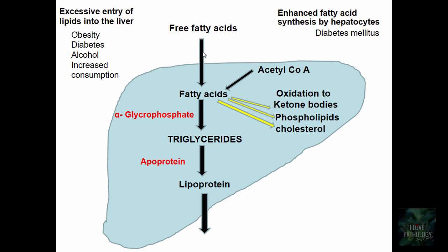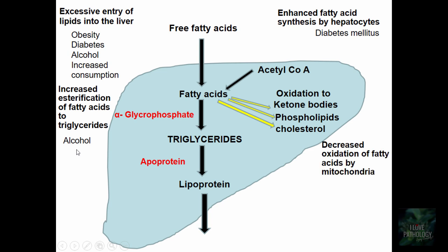In diabetes mellitus, there are increased levels of glucose. Glucose is converted to pyruvate, and then pyruvate is converted to acetyl-CoA. So whenever there is increased glucose, there is increased acetyl-CoA formation, and with more acetyl-CoA there is increased synthesis of fatty acids as well. Fourth, whenever there is increased esterification of fatty acids to triglycerides, the amount of triglycerides within the liver increases — and again, alcohol is the most common cause here.